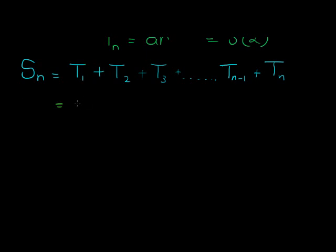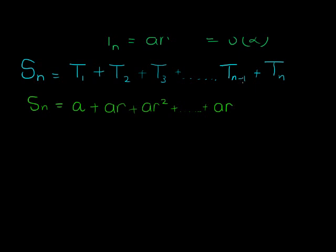The first term is A, the second term is A times R, the third term is A times R squared, the fourth is A times R cubed. Notice that each term is multiplied by one fewer R than the term number. So the N minus 1 term has R to the power of N minus 2, and the final term has R to the power of N minus 1. This formula for S_N is ugly because of the unknown dot-dot-dot in the middle.